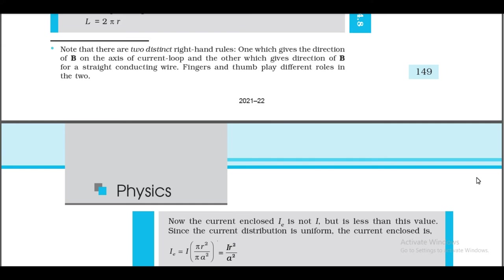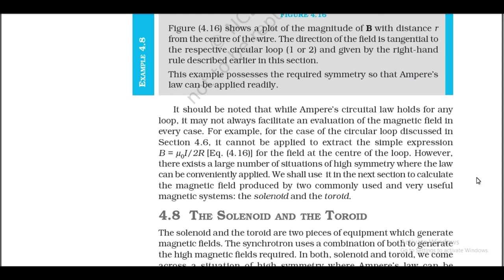Ampere's circuital law is not new in content from Biot-Savart law — both relate the magnetic field and the current and express the same physical consequence of a steady electrical current. Ampere's law is to Biot-Savart law what Gauss's law is to Coulomb's law. Both Ampere's and Gauss's laws relate a physical quantity on the periphery (magnetic or electric field) to the source in the interior (current or charge). Ampere's circuital law holds for steady currents which do not fluctuate with time. While it holds for any loop, it may not always facilitate evaluation of the magnetic field in every case.